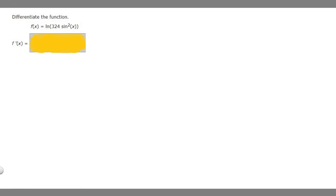So in this problem we're asked to differentiate the function f of x which is equal to the ln of 324 times the sine squared of x.